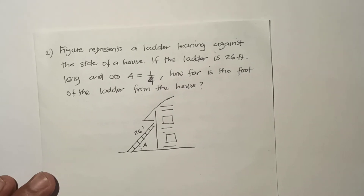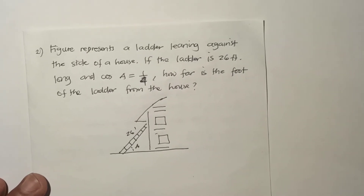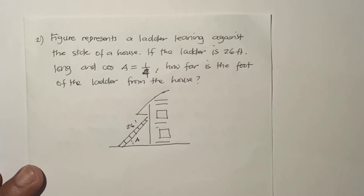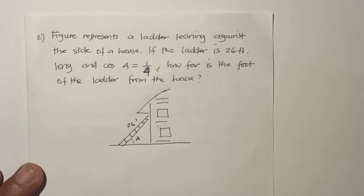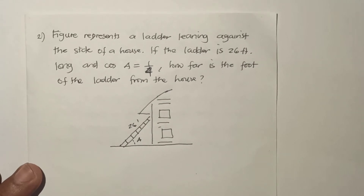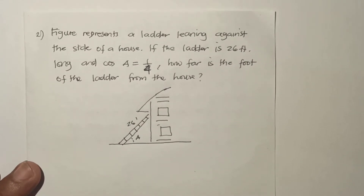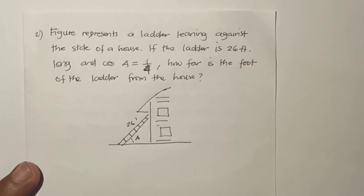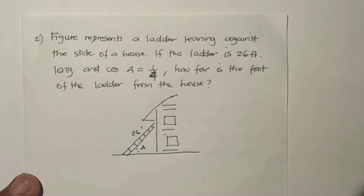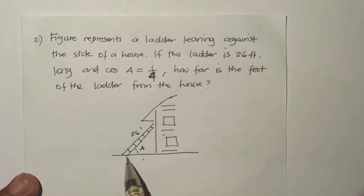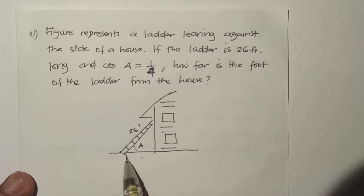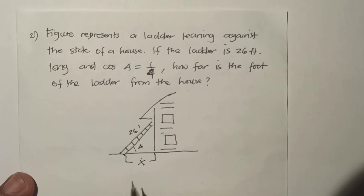Now let's continue with problem number two. This problem represents a ladder leaning against the side of a house. The ladder is 26 feet long and cosine is equal to one fourth. How far is the foot of the ladder from the house? What we are looking for is the distance from the foot of the ladder to the house, which is x.